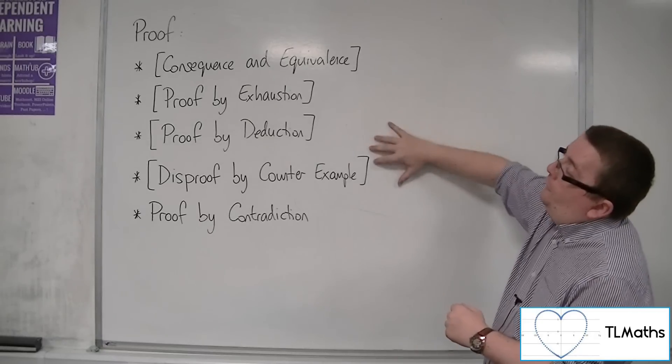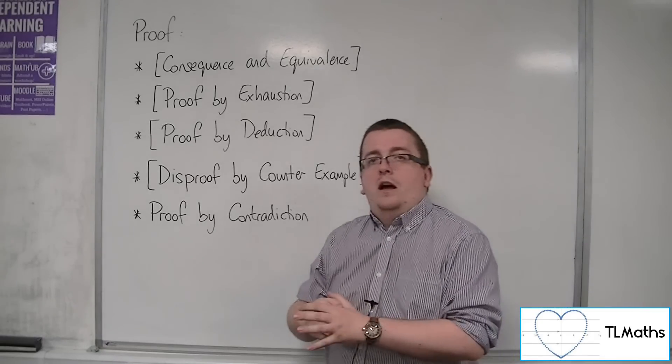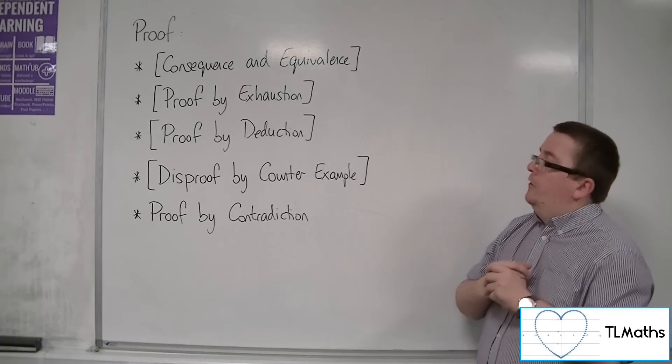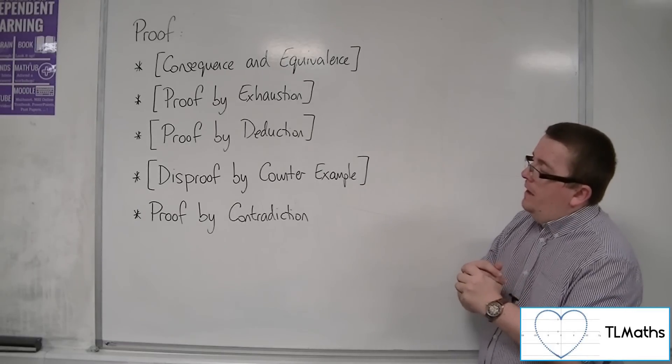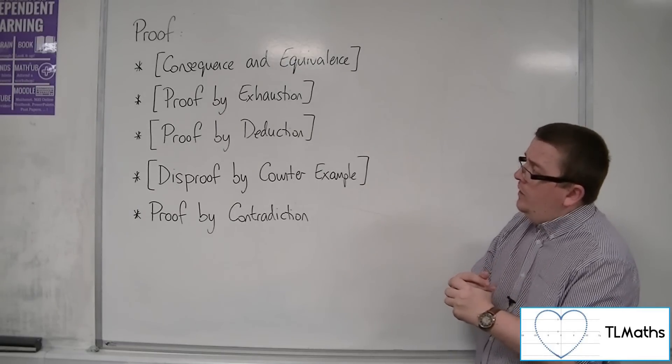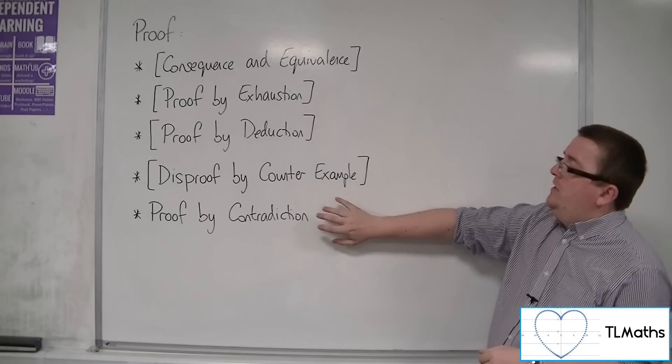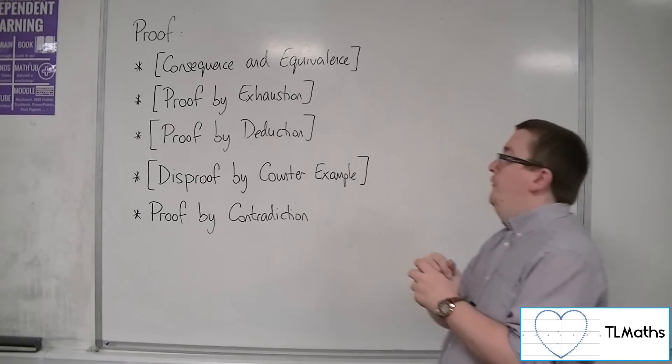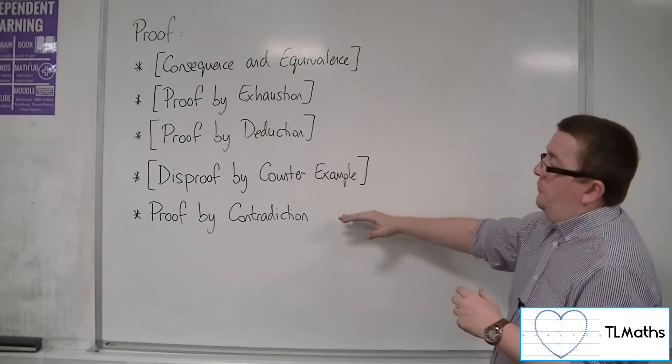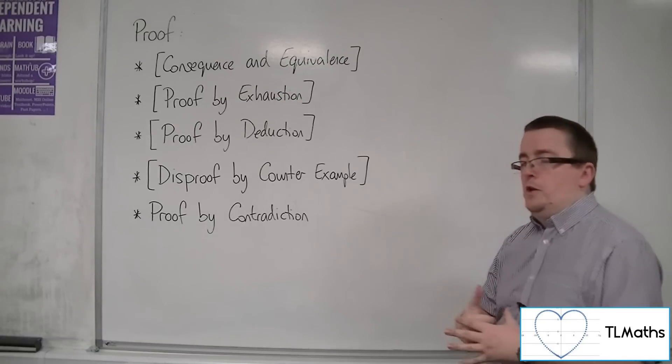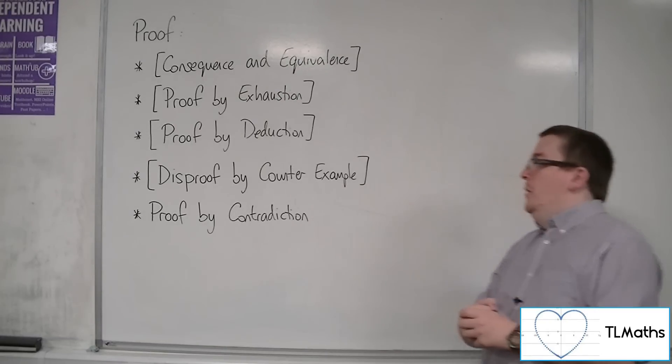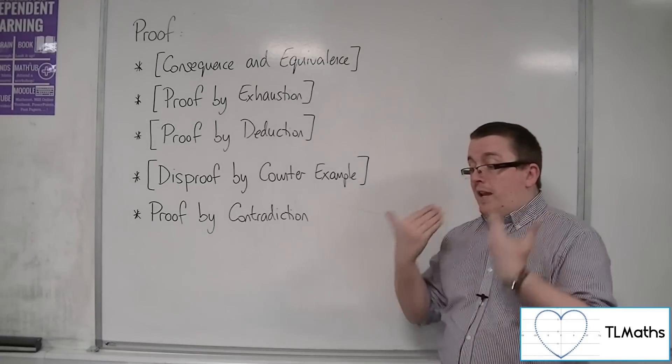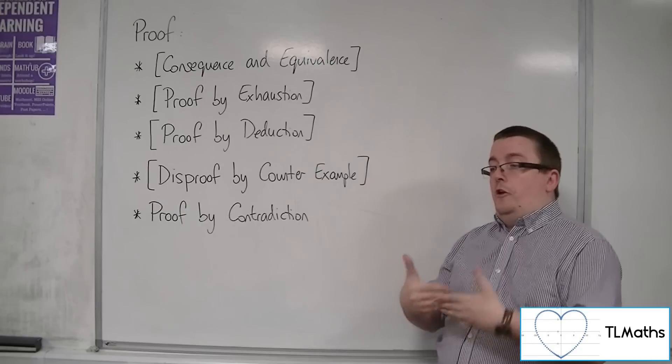These first four parts are all a part of AS maths, whereas the only section that is just in the full A level and is not part of AS maths is proof by contradiction. With proof by contradiction, we'll be looking at a statement and then assuming